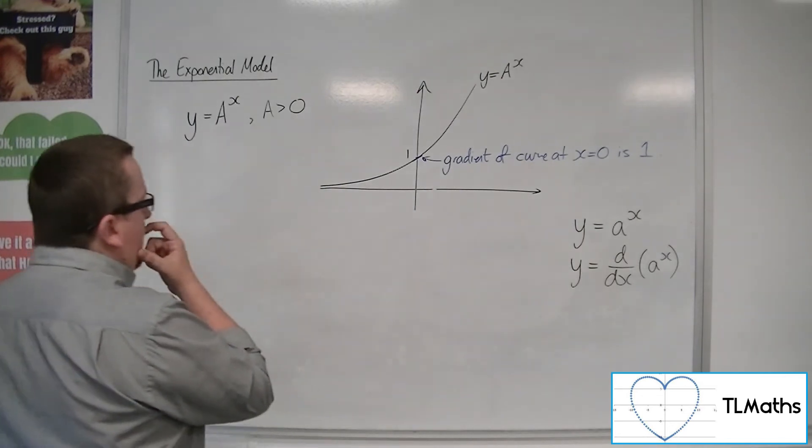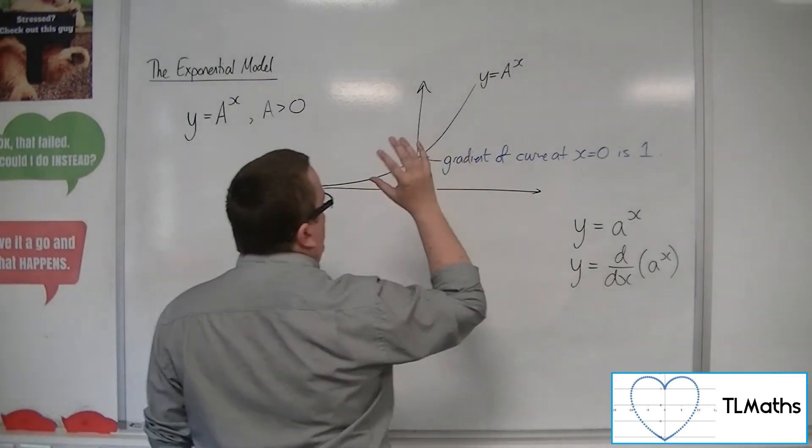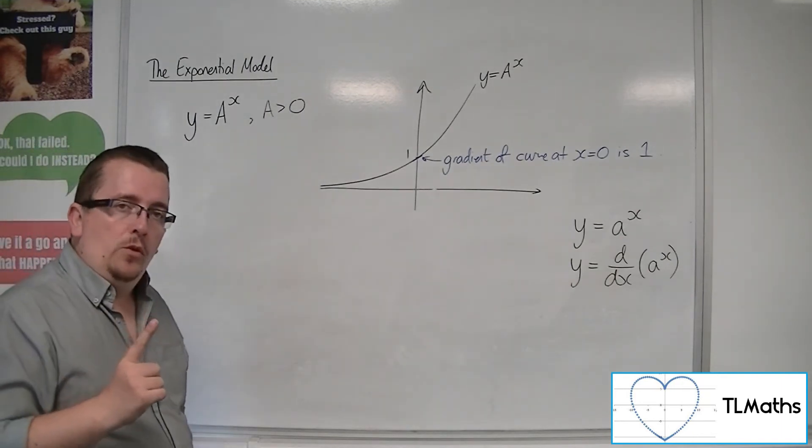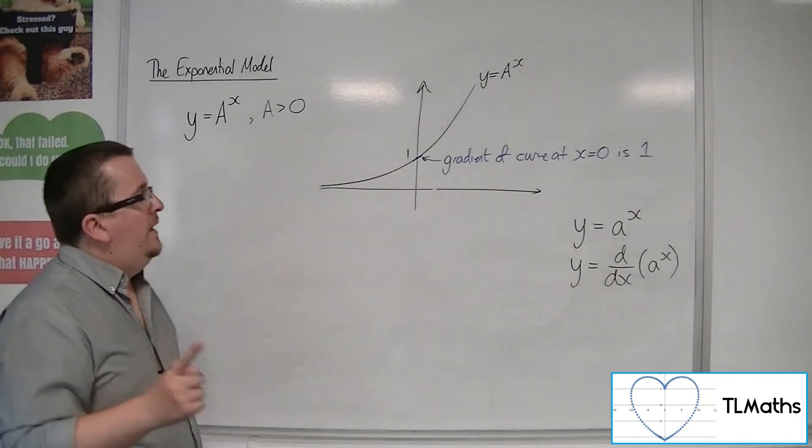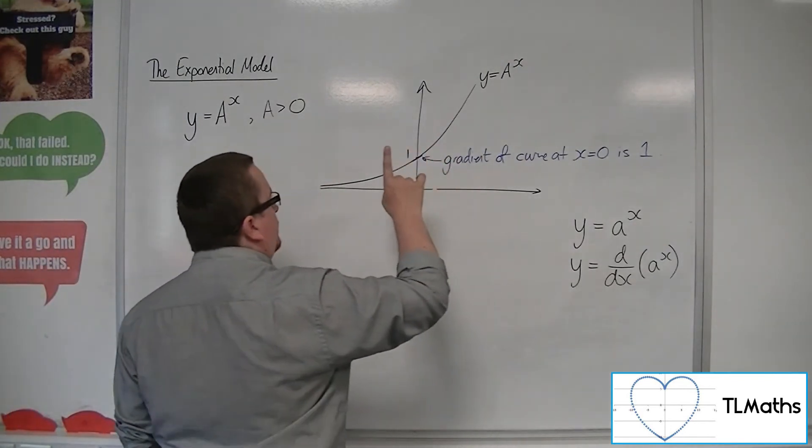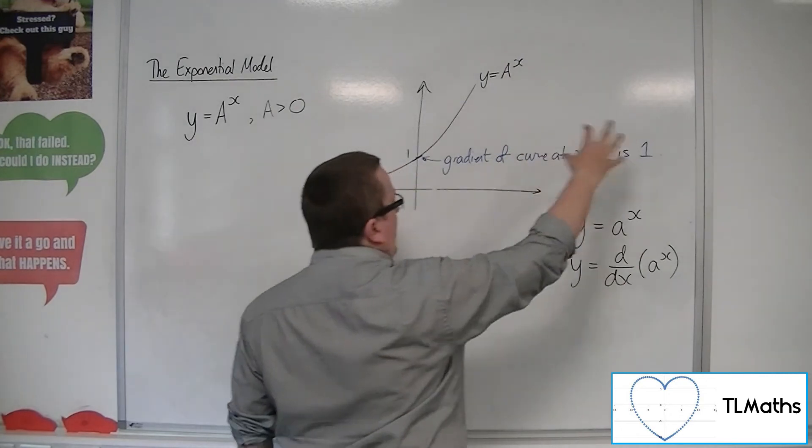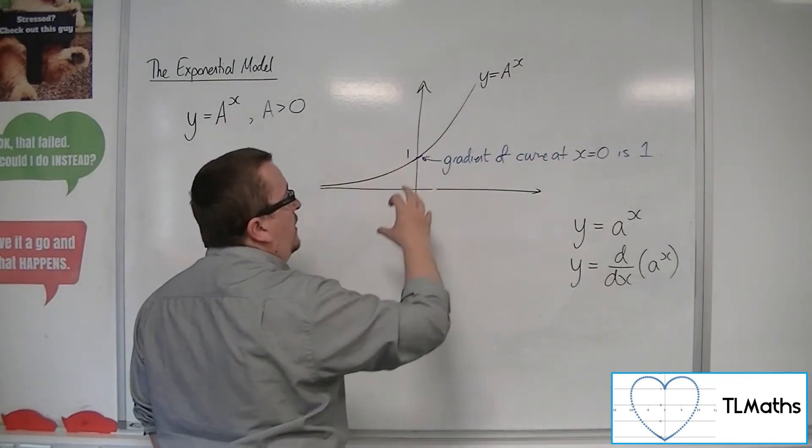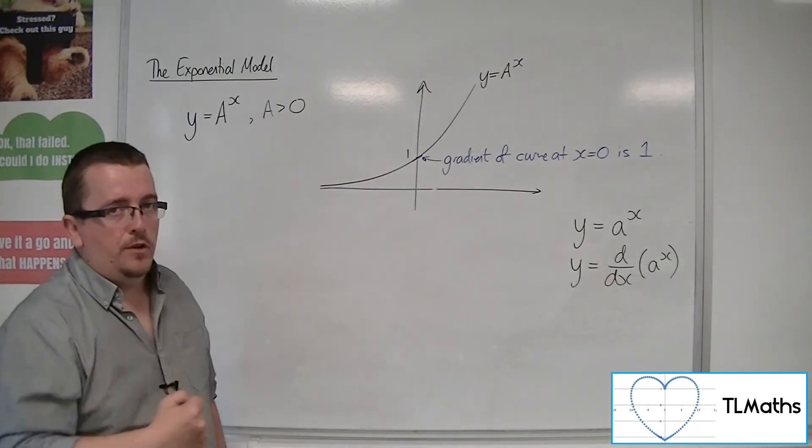So actually it's not just this idea that we want the gradient of the curve at x equals 0 to be 1, but in doing so, what you actually find is that the gradient of this curve, and the consequence of that, is that the gradient function of this curve is actually precisely the same function.